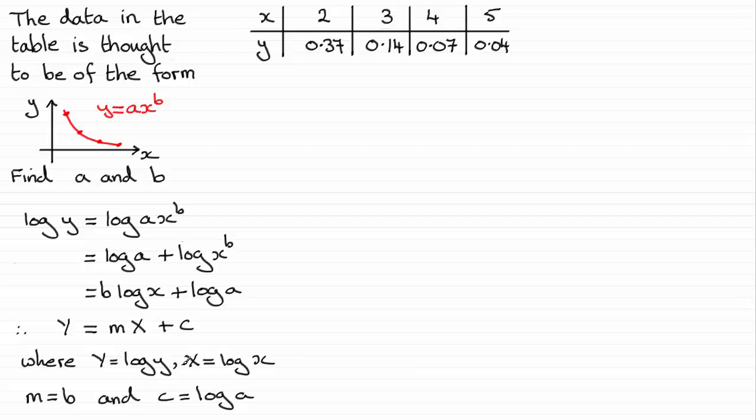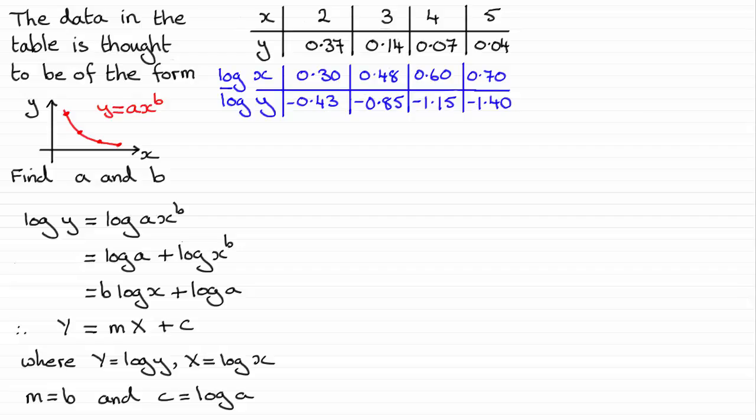But first of all, we need to form a table of the values of log x and log y. So I'm going to put it underneath this table here. And if you were to do that, for instance, the log of 2 turns out to be 0.30 to two decimal places. And the log of 0.37 turns out to be minus 0.43 to two decimal places. And you've got similar results for the x and y values that you see here.